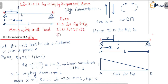We will calculate: ILD for support reactions RA and RB, then ILD for shear force at C, then ILD for moment at C. Let us start with ILD for reaction at A. We assume our unit load is acting between A and C, at a distance X from A. The distance between A and C is Z, and the total span of the beam is L.